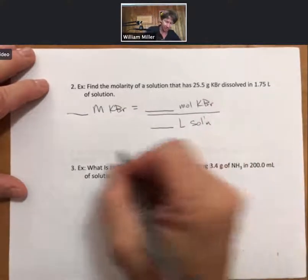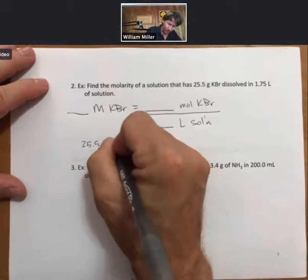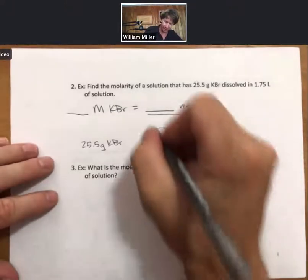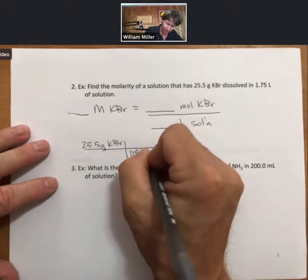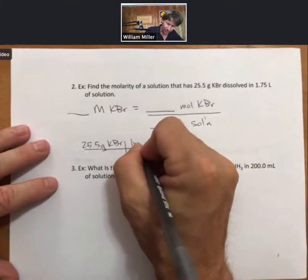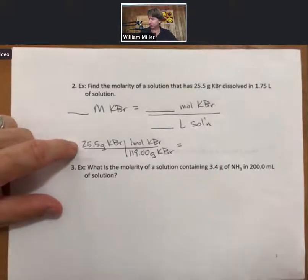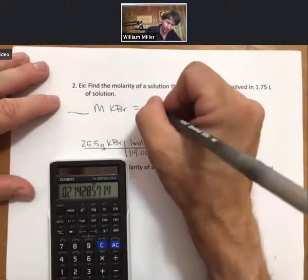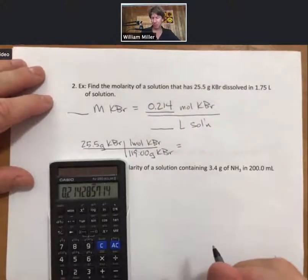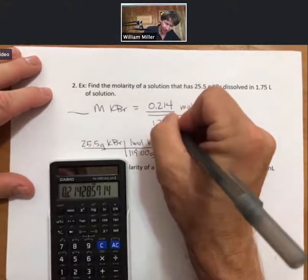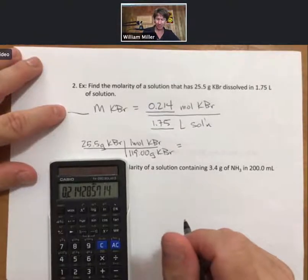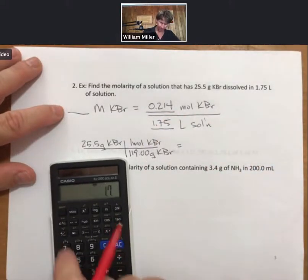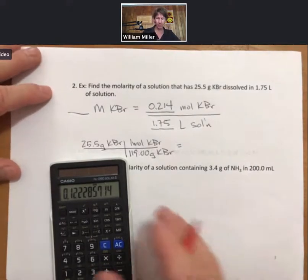We have the grams of potassium bromide and not the moles, but we do know how to convert. The molar mass of potassium bromide is 119.00. We have the liters, 1.75. However you do this, whether you call this your X and then solve for X or simply write it on the line, I am going to go to 0.214 divided by 1.75. I get 0.122 molar potassium bromide.